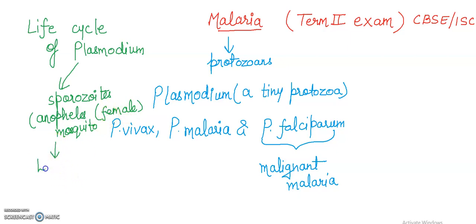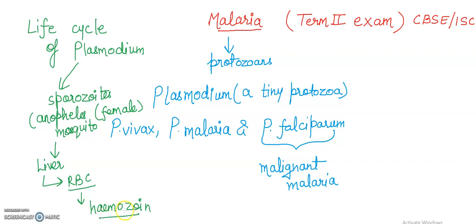The parasite initially multiplies within the liver cells and then attacks the RBCs. The rupture of RBCs is associated with the release of a toxic substance called haemozoin, which is responsible for the chills and high fever recurring every three to four days. When a female Anopheles mosquito bites an infected person, the parasites enter the mosquito body, undergo development, multiply, and form sporozoites stored in the salivary glands.